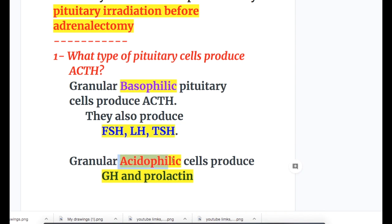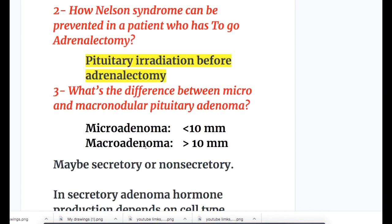Granular acidophilic cells of the pituitary produce growth hormone and prolactin. How can Nelson syndrome be prevented in a patient who has to undergo adrenalectomy? Pituitary irradiation before adrenalectomy can prevent the development of Nelson syndrome.